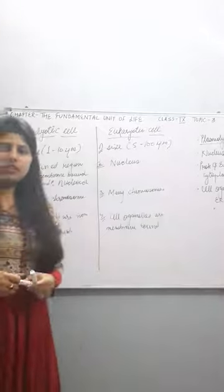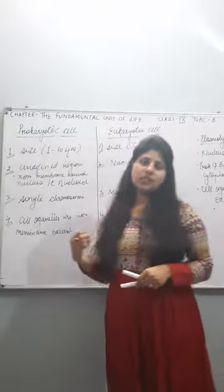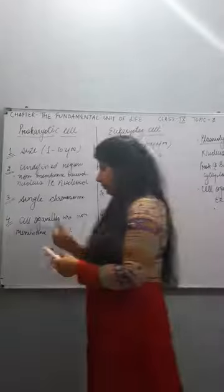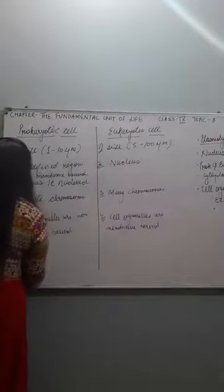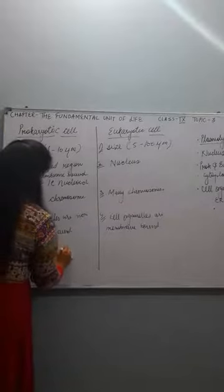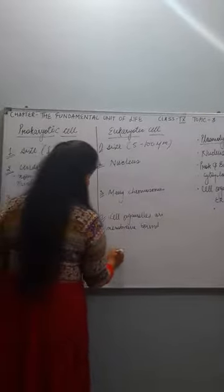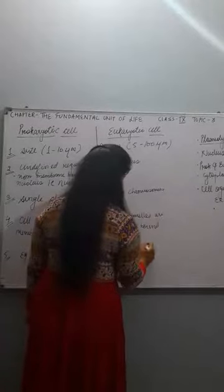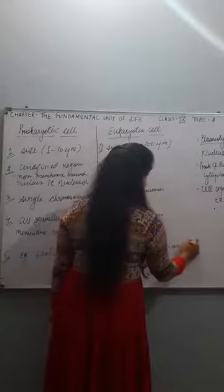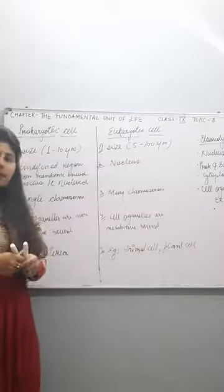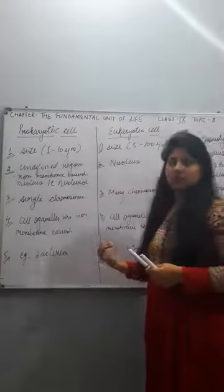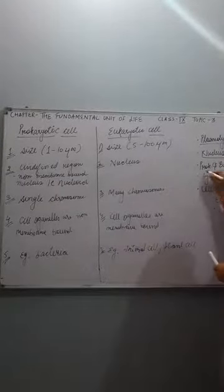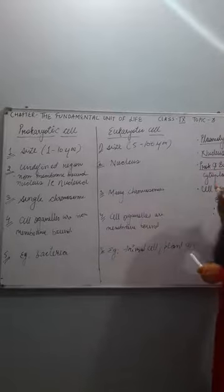So those are the four differences. Learn them and recall these points about eukaryotic and prokaryotic cells. You can also note one more point — examples. Example of prokaryotic: bacteria. Example of eukaryotic: animal cell and plant cell, because both animal and plant cells contain membrane-bound nucleus — that's why they are eukaryotic. Now we have finished with nucleus, prokaryotes and eukaryotes. Coming to the next topic: cytoplasm.